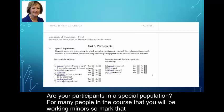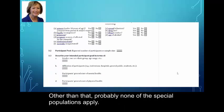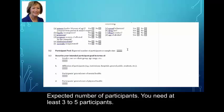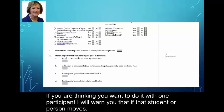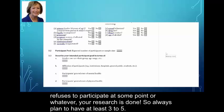Are your participants in a special population? For many people in the course, you will be working with minors, so mark that. Other than that, probably none of the special populations apply. Expected number of participants: you need at least three to five. If you're thinking you want to do it with one participant, I will warn you that if that student moves or refuses to participate at some point, your research is done. Always plan to have at least three to five.